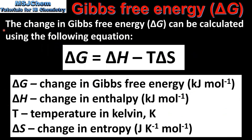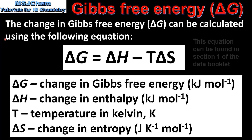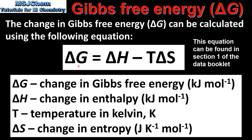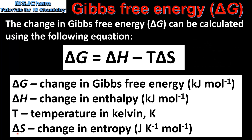The change in Gibbs free energy can be calculated using the following equation: Delta G equals delta H minus T delta S. Delta G is the change in Gibbs free energy and is measured in kilojoules per mole. Delta H is the change in enthalpy, also measured in kilojoules per mole. T is the temperature in Kelvin, and delta S is the change in entropy. Note that the units of entropy are joules per Kelvin mole.